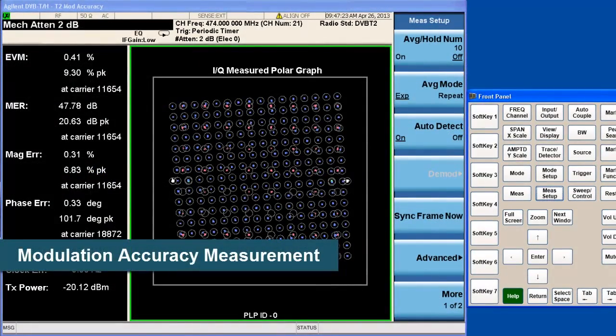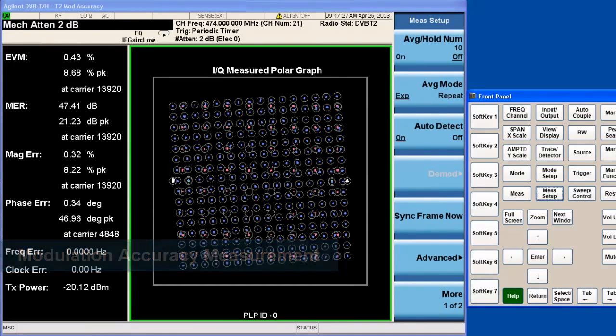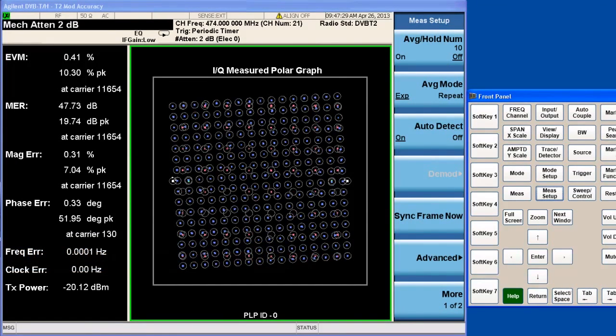Next, let's measure the modulation accuracy. We don't need to worry about the complicated parameters for the DVB-T2 system. The N6153A can detect the parameters automatically by decoding the L1 signaling in the DVB-T2 frame. After pressing sync frame now,